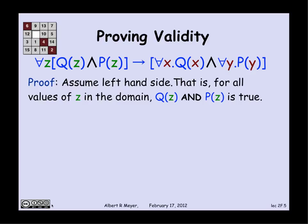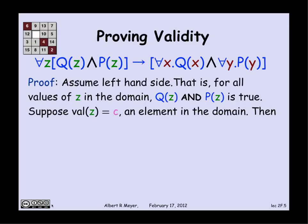What's the left-hand side say? It says that for every z, Q of z holds and P of z holds. That means that for every possible environment that assigns a value to z, Q of z and P of z both come out to be true. Well, suppose that the environment assigns the value c to z, where c is some element of the domain. Then what this means is that in that environment, Q of z and P of z is true, which means that Q of c and P of c holds.